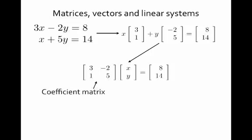The matrix you see here we call the coefficient matrix. Looking back at the original linear system, those are just the coefficients on the x's and y's plucked off and put in their relative positions. I'm multiplying that times the vector x, y, and that equals the single vector 8, 14.